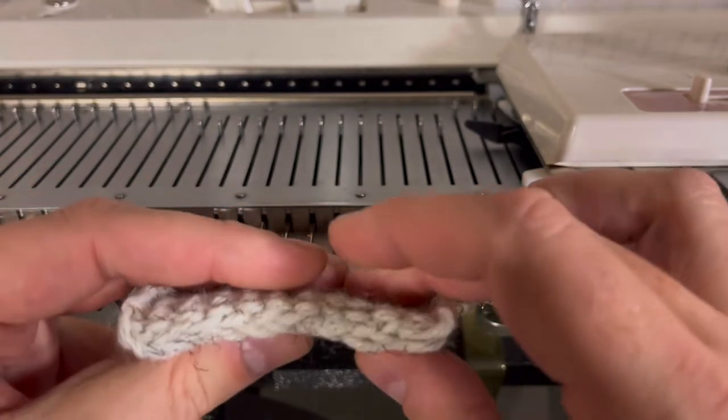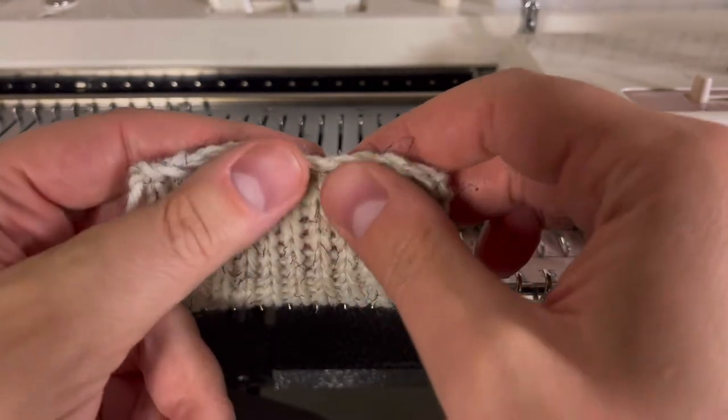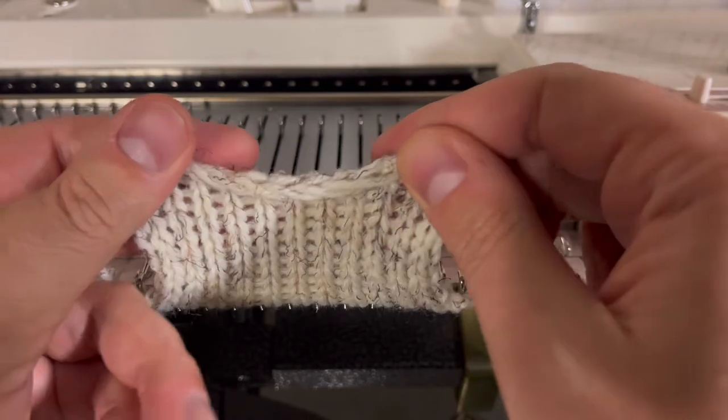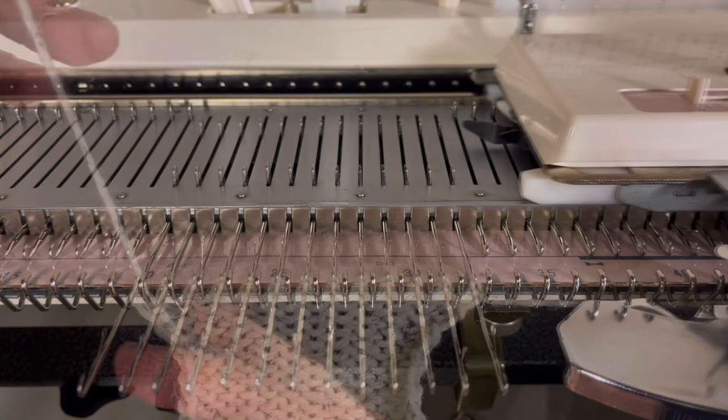The double E-wrap cast-on produces an elastic edge similar to the E-wrap cast-on, though in this version the first row is manually knit in with the cast-on edge.